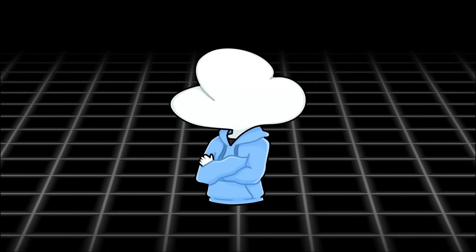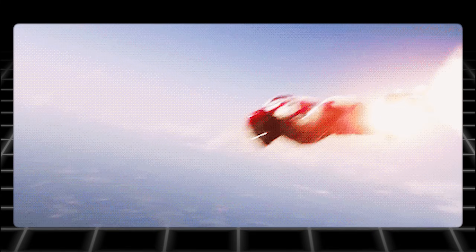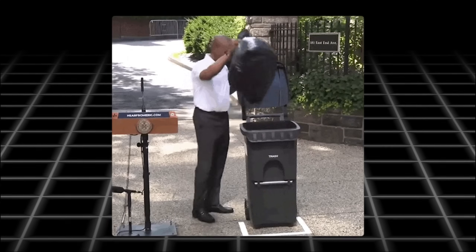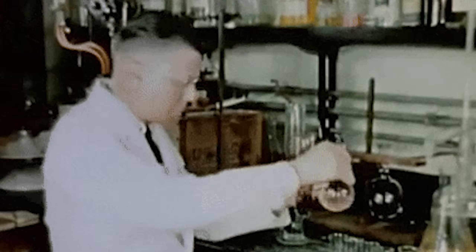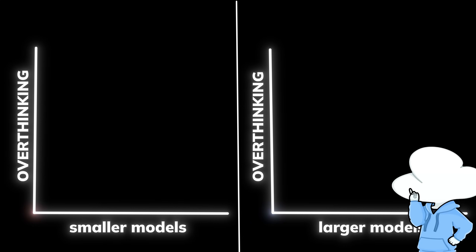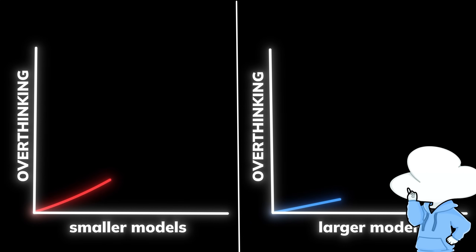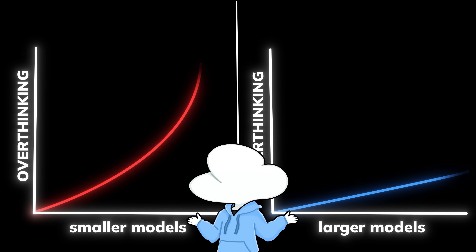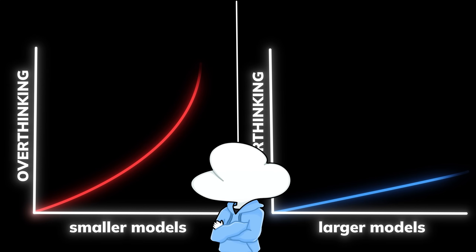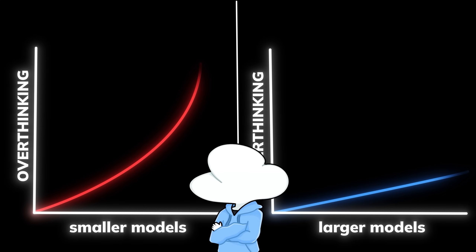However, we know that adding reasoning still boosts performance disregarding overthinking, so completely ditching it isn't a real solution. Luckily, they found something more interesting: in their experiment, smaller reasoning models overthink significantly more than larger reasoning models. This is most likely due to the lack of intelligence, which causes smaller models to struggle with utilizing the extra reasoning tokens to navigate a given problem.